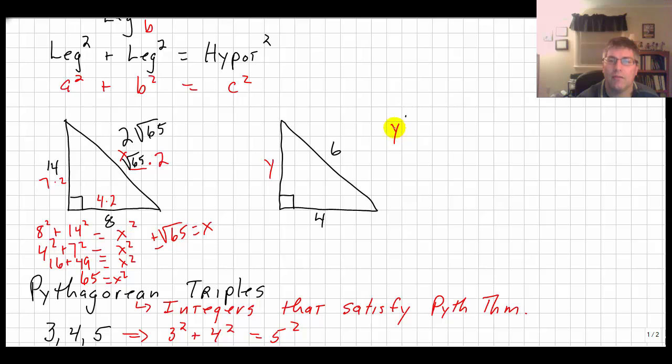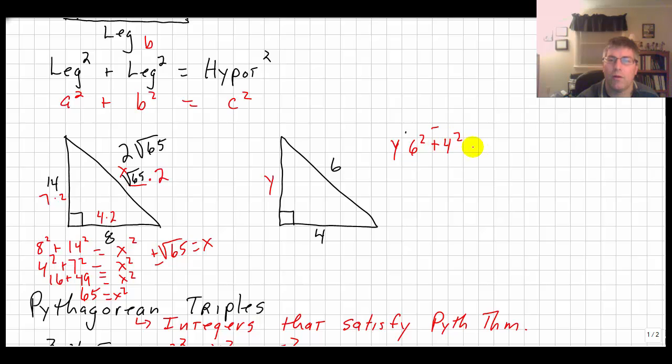We definitely don't want to say 6 squared plus 4 squared equals y squared. We don't want to do that on this problem because we are not looking for the hypotenuse. This problem would be 4 squared plus y squared equals 6 squared. And I'll leave this for you to solve for y. Some of you guys might have already seen that's 2 times 2 and that's 2 times 3. So that's going to be 2 times something. You could use the reduced triangle principle there.